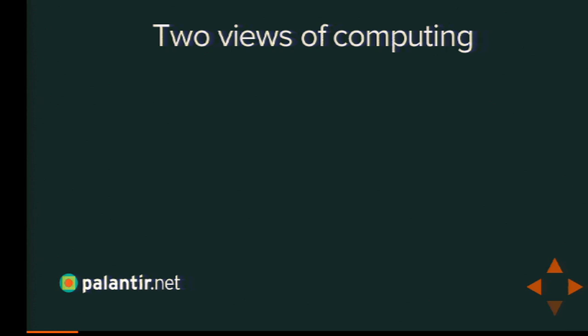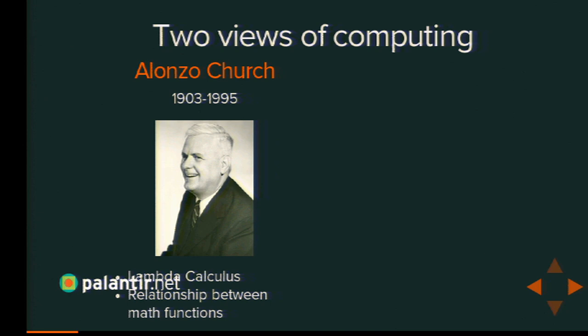Let's start back in the 1920s and 1930s, when logicians and mathematicians were trying to figure out what it means to compute something. This is back when a computer was a person — usually a woman — who sat all day and did math for her job. That was a computer; the electronic things came in later. And scientists were trying to think through: what does it mean to compute something? What does it mean to calculate? And there were two main camps that developed.